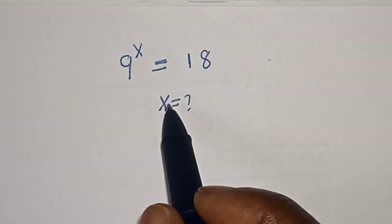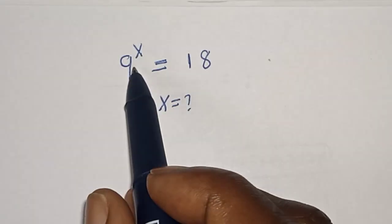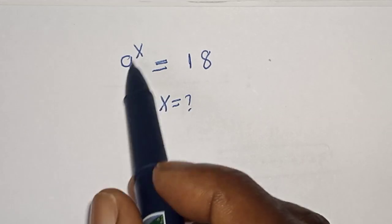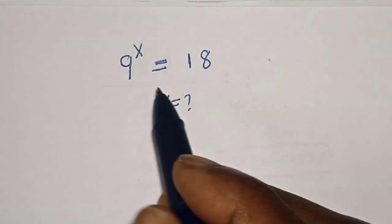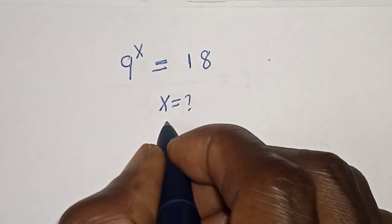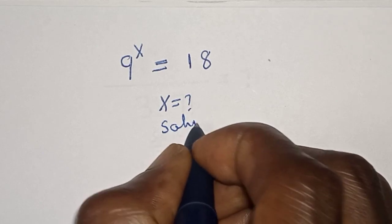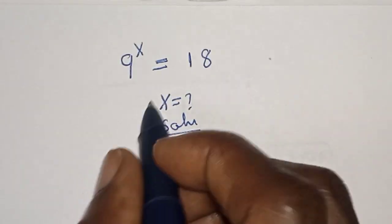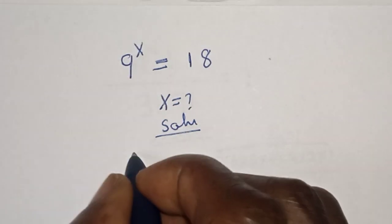Hello, welcome to Magis. In this class we want to find the value of s from this equation: 9 raised to the power s is equal to 18. Like, share, comment and subscribe. Solution: let's take the log of both sides.